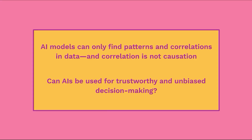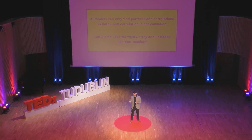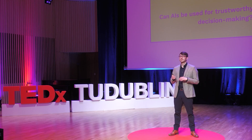AI models can only learn patterns and correlations from data. And as we all know, correlation is not causation. Understanding cause and effect is crucial for decision making. So based on this, should we trust AI models to make decisions about vital cases of life and death?